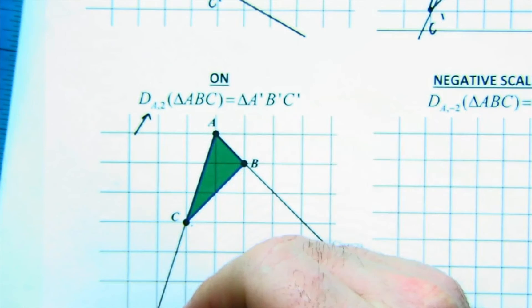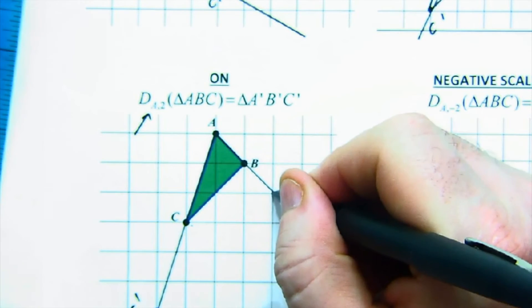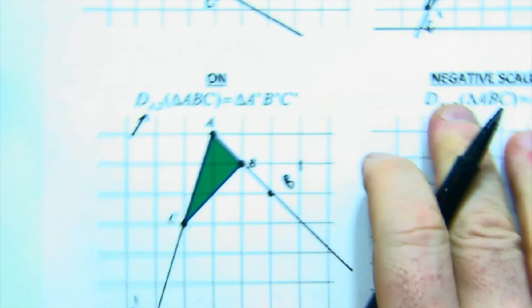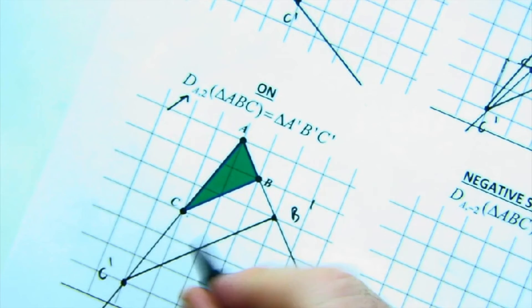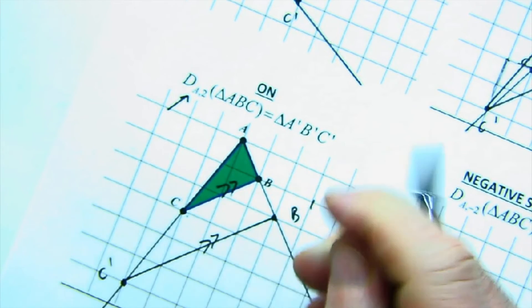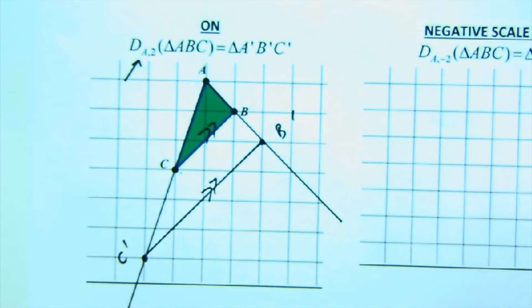So one over three down, one over three down. Here's C prime. One over one down, one over one down. There's B prime. When you create these, I hope you're seeing all those beautiful parallel lines that are being formed. You're seeing the proportionality. Lots of great stuff here.